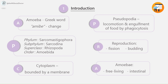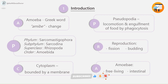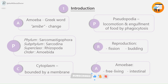The cytoplasm of amoebae is bounded by a membrane and can be differentiated into an outer ectoplasm and inner endoplasm. Pseudopodia are formed by thrusting out ectoplasm followed by endoplasm, employed for locomotion and engulfment of food by phagocytosis. Reproduction occurs by fission and budding. Cysts are formed in unfavorable conditions and are usually the infective form for vertebrates — for example, Entamoeba histolytica.